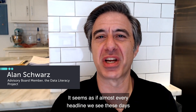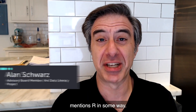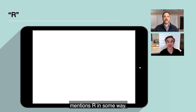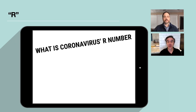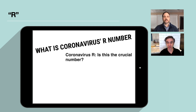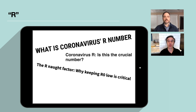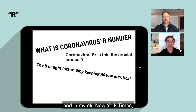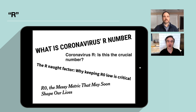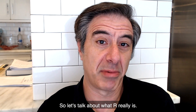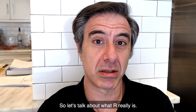It seems as if almost every headline we see these days mentions R in some way. Here's a few: 'What is coronavirus' R number?' 'Coronavirus R, is this the crucial number?' 'Remember the R-naught factor — why keeping R-naught low is critical.' And in my old New York Times: 'R-naught, the messy metric that may soon shape our lives.' So let's talk about what R really is.